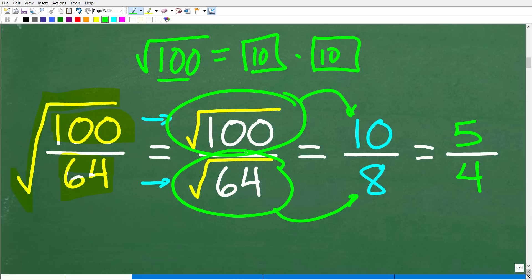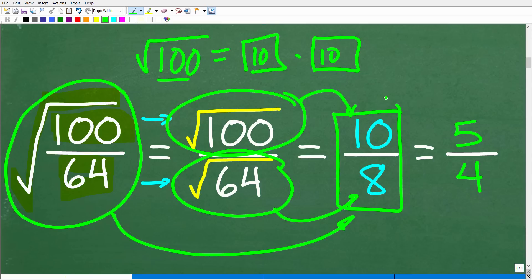All right, so now at this point, we just took this expression, this big square root here, and we got it down to this lovely fraction 10 over eight. But anytime you're dealing with anything in mathematics, especially fractions, you always wanna make sure you write them in their simplest form. And here, we can reduce this fraction 10 over eight into the fraction five over four, right? Because two goes into 10 five times, and two goes into eight four times.